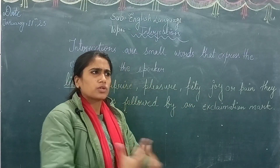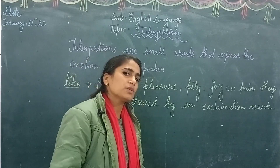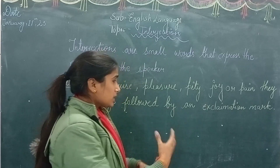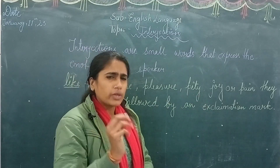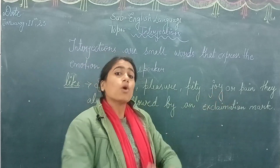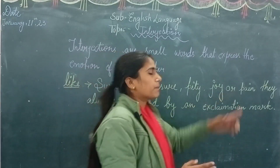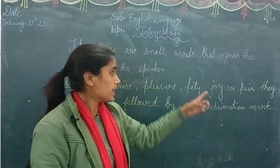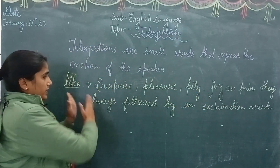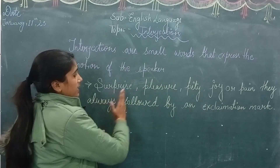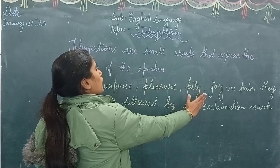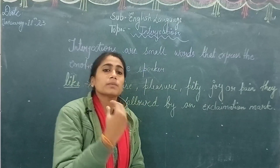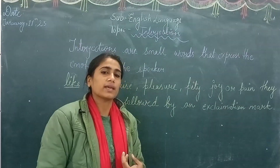If a speaker is surprised, pleasure means you are happy, pity means that you are sad, joy means that you are happy, and pain means that you are in pain. So all these sudden feelings — surprise, pleasure, pity, joy, and pain — when we show them through small words, they are called interjections.